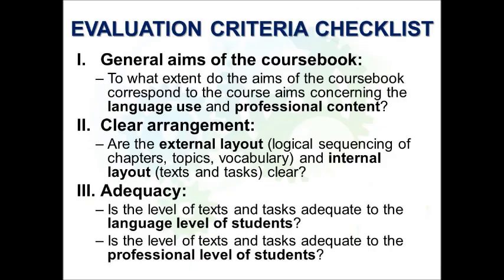The last topic I'd like to focus on in my presentation is the development of evaluation criteria checklist. To evaluate the e-coursebook by teachers and students, the evaluation criteria checklist was developed. After the modification of the checklist and evaluation of its reliability, 23 criteria or items were clustered into seven categories. The first three categories are general aims of the coursebook, where the criteria address the extent to which the aims of the coursebook correspond to the course aims. The second category, clear arrangement, includes criteria related to the external and internal layout of the coursebook. And the third category, adequacy, includes criteria addressing the adequacy of the text and tasks to the language level and professional level of the students.